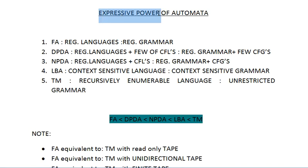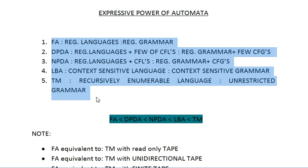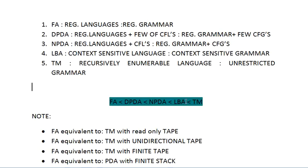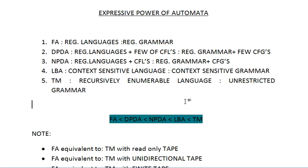To summarize: the expressive power hierarchy goes from FA up to TM. The acceptors are FA, DPDA, NPDA, LBA, and TM. Each has corresponding languages and grammars as discussed. In the next lecture, we will cover the equivalence of languages, grammars, and automata, though much of it has already been addressed here.